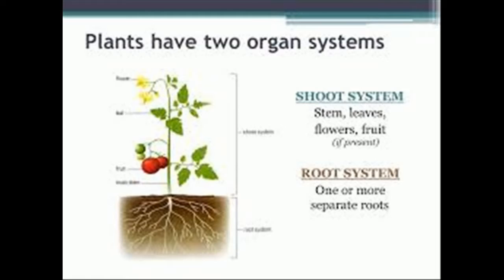The shoot system is above ground and includes organs such as leaves, buds, stems, flowers if the plant has any, and fruits if the plant has any.